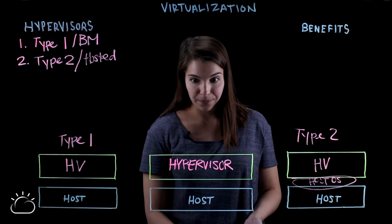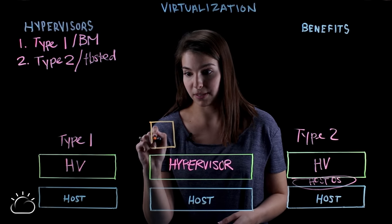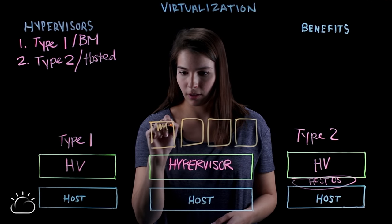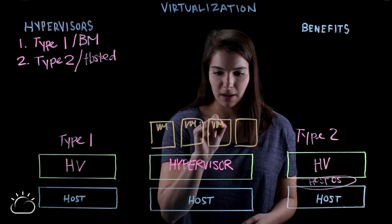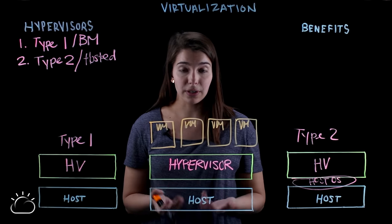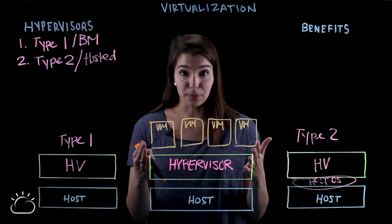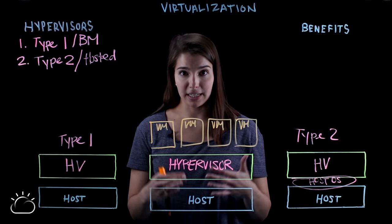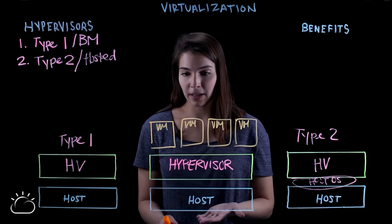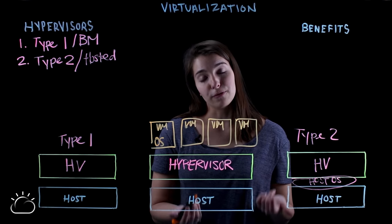Once you have your hypervisor installed, you can build virtual environments, or virtual machines, or simply VMs. A VM is simply a software-based computer. They run like a physical computer — they have an operating system and applications, and they're completely independent of one another, but you can run multiple of them on a hypervisor. The hypervisor manages the resources that are allocated to these virtual environments from the physical server. Because they're independent, you can run different operating systems on different virtual machines.